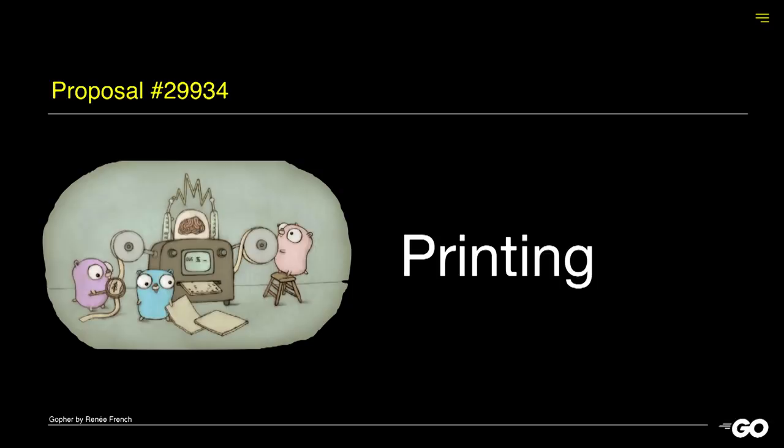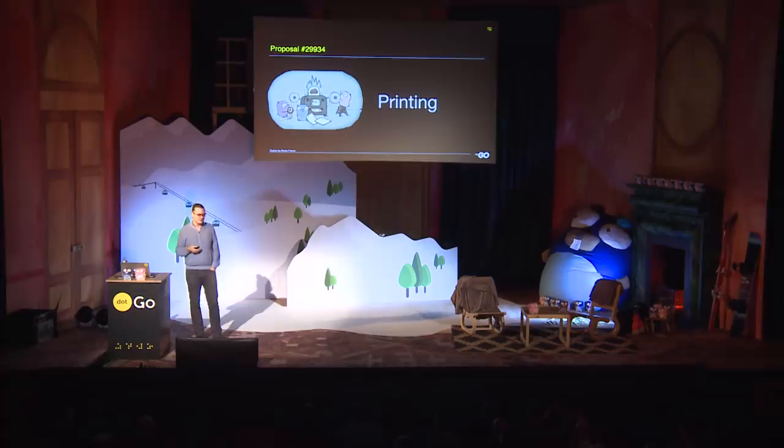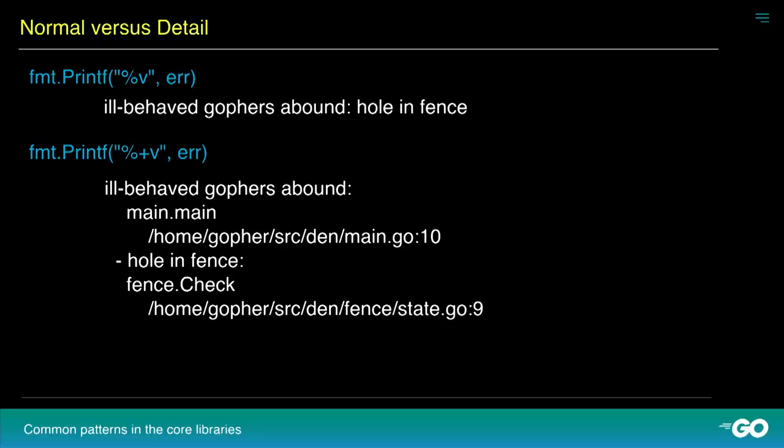The other part of the proposal is printing. Printing is about providing detail and allowing localization. At the top, you have an error message which looks very much like what you'd expect from Go. But below, you have that same message with detail information added. You can judge that from the colon in the above message — there are really two errors involved, one wrapping the other. In the detailed output, each of these gets its own line, and below that you can have detailed information, such as stack information, but it can be anything you want to print there.